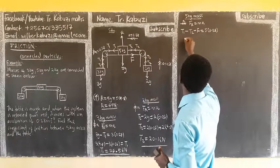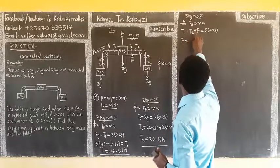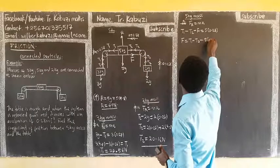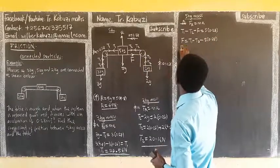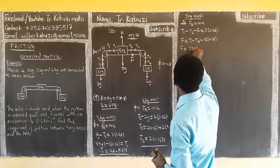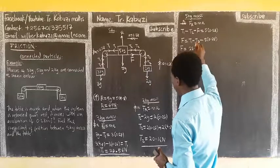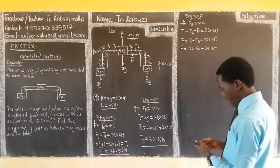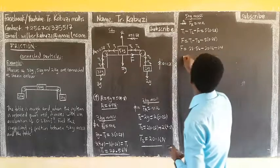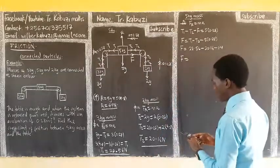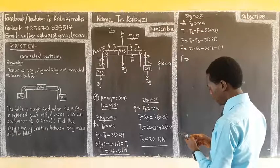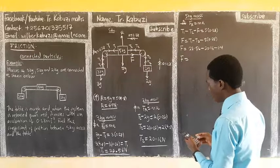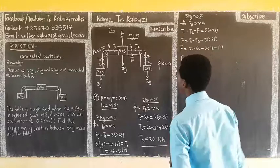So from here, I can get my F. From there, my F will be equal to when I take this side, I will be having T1 minus T2. Then minus when I bring this side, 5 times 0.28. So my friction is going to be T1, 28.56 minus T2, 20.16 minus when we calculate this, 1.4. So my friction is 7 newtons.